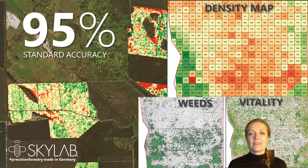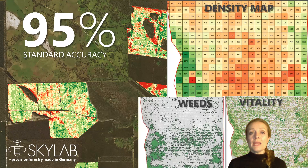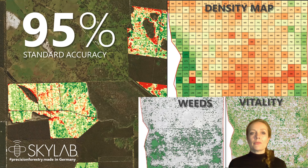Here we analysed 4,000 hectares of plantations for a customer in Australia in 2020. The density map shows the number of seedlings that have survived in each 20 by 20 metre grid cell, and you can really see the variation across the stand, between the poor performing areas in the middle and the more thriving areas towards the edges. We also provide weed maps that analyse the density of weeds, and in many cases vitality maps showing the relative vitality of the seedlings.